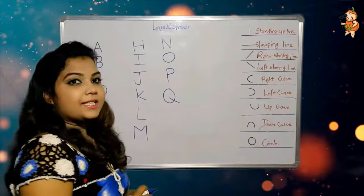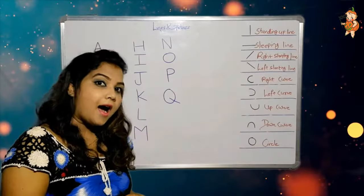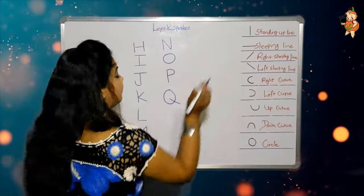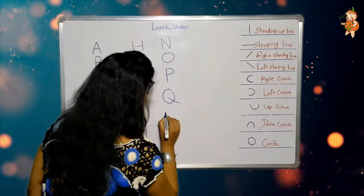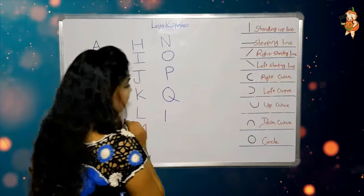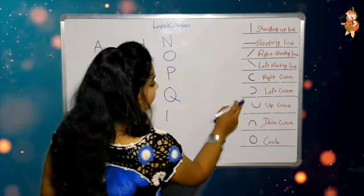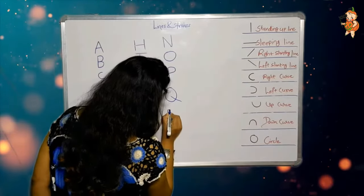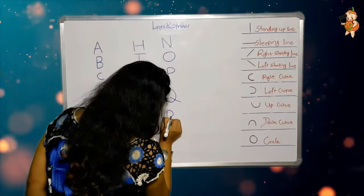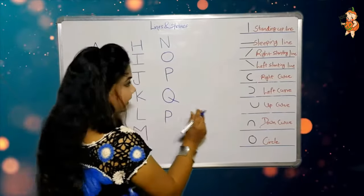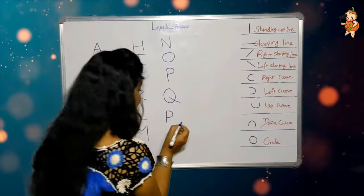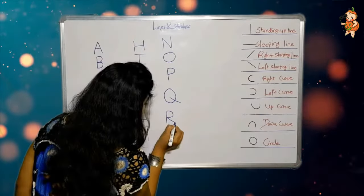Now it's time to make R — one standing up line, one left curve, and one left slanting line. That makes R.